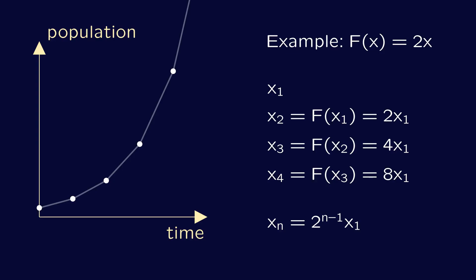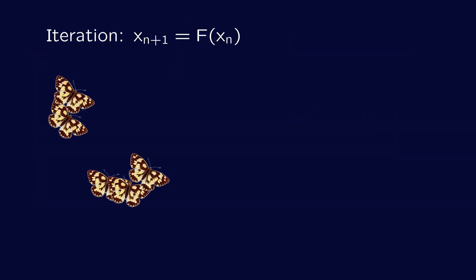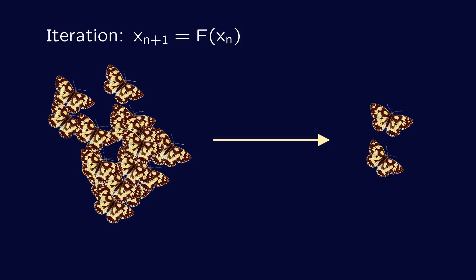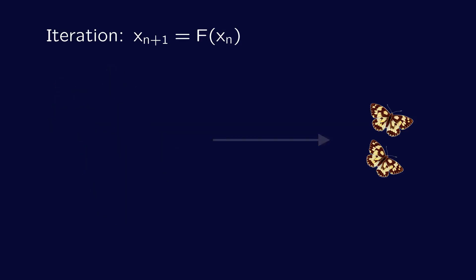A more realistic choice for the update function would be such that high numbers one year lead to low numbers the next, because there would not be enough food to sustain a population that large. We can achieve this by multiplying our previous update function f by the factor 1 minus x, so that now f of x equals 2 times x times 1 minus x.